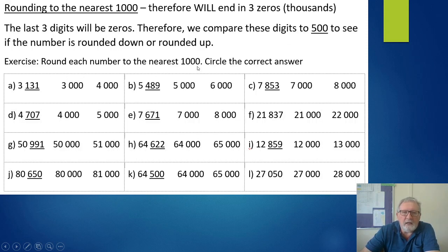In this particular case I've given you the thousands that it falls between and you have to simply circle which of those you're going to go to. So 3131 - is it closer to 3000 or is it closer to 4000? So you simply circle your choice. This one should be a little bit faster for you, a little bit easier. Pause the video while you complete this exercise.